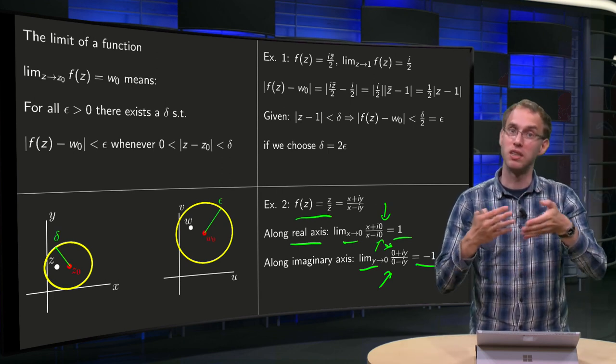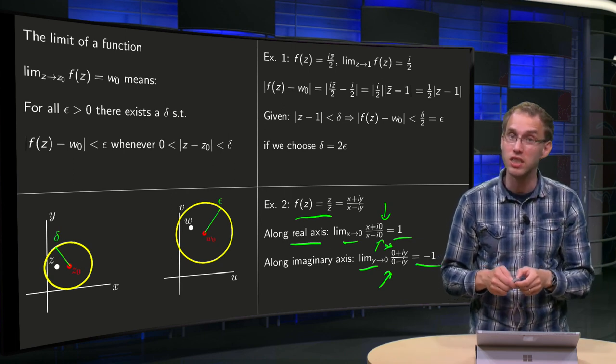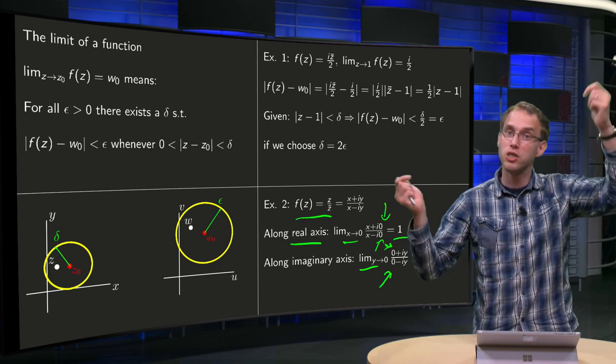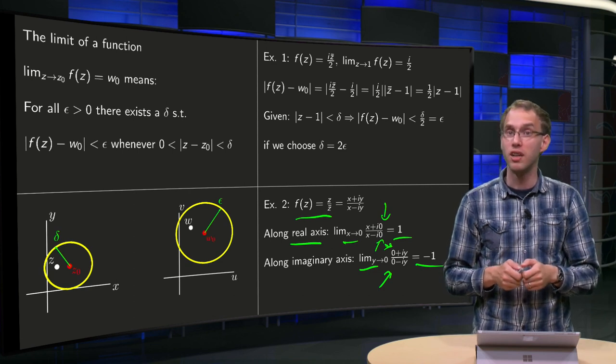But that's not the same value, which means that the limit does not exist. So if you want to show that the limit does not exist, it's actually a bit easier. You just have to find two ways towards, in this case 0, which yield a different result.